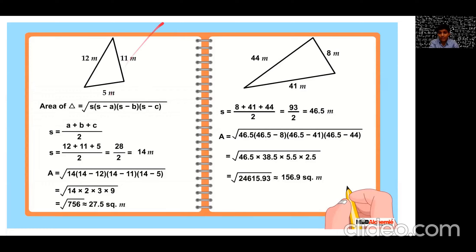Now, for the second triangle, this side is 44, this is 8 and this is 41 meters. s is equal to 8 plus 41 plus 44 divided by 2 which is 93 by 2 which is 46.5 meters.